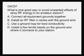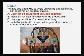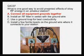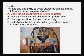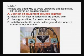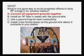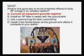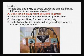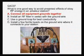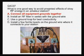What's one good way to avoid unwanted effects of stray RF energy in an amateur station? The correct answer is to connect all the equipment grounds together. Here you see an effectively connected ground system. There is a ground bus — a copper plate — with various antenna switches connected to it, serving as an effective ground. Ground braids go out to the ground system, with other connections going to the antenna tuner, transceiver, and so on.